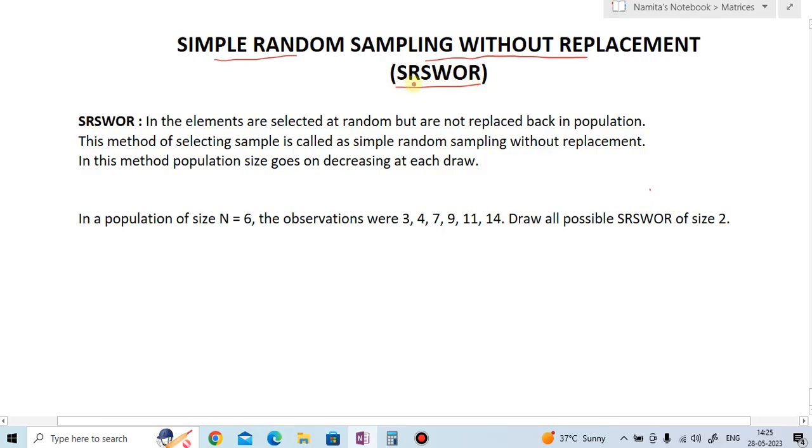S stands for simple, R stands for random, S stands for sampling, W stands for without, R stands for replacement. So now what does simple random sampling without replacement mean?